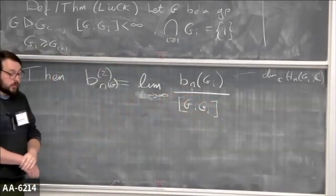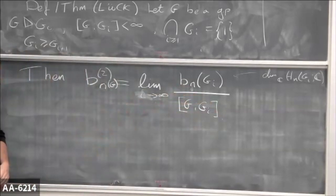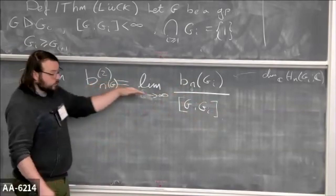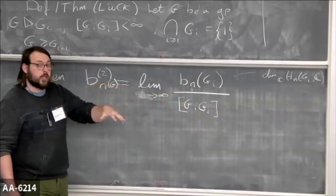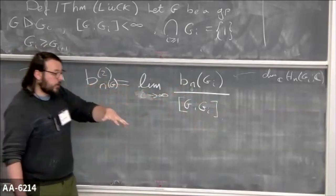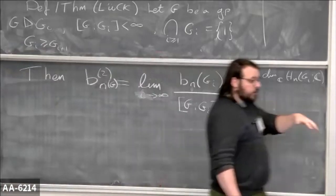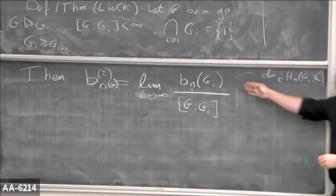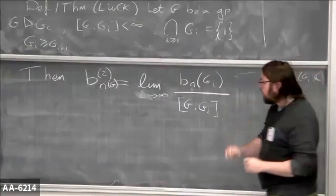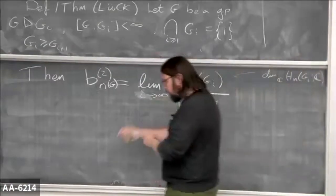For free groups, it is independent. This also lets you compute it for surface groups — if you have an n-fold cover of some surface of some genus, you can compute the genus of the cover and the Betti numbers there, and so you can compute this number. This really lets you do some computations.